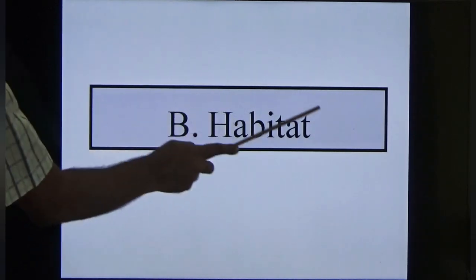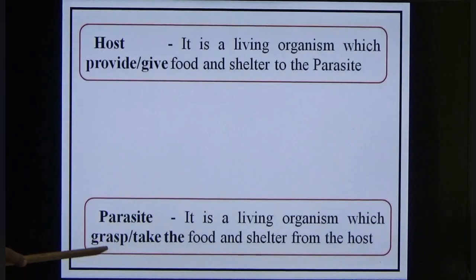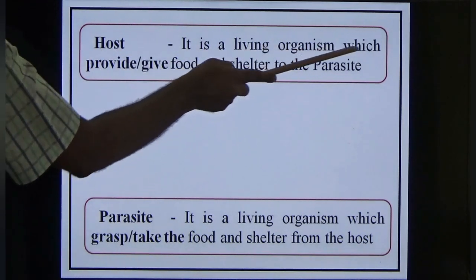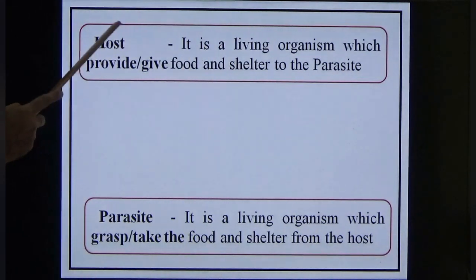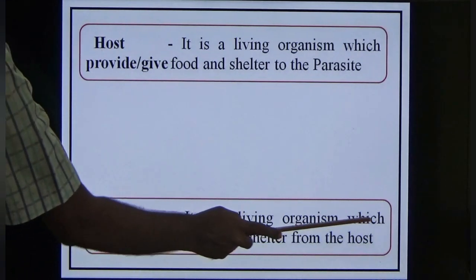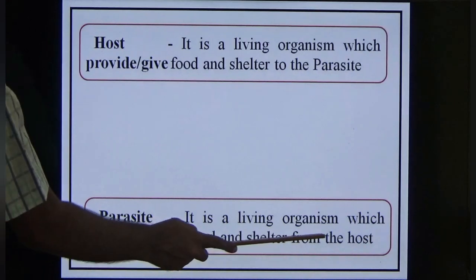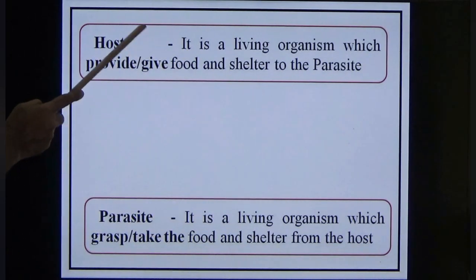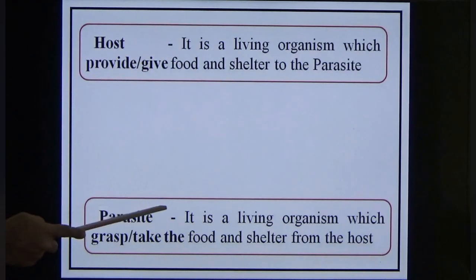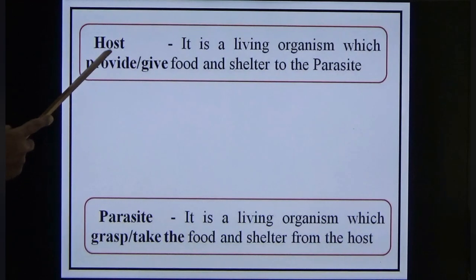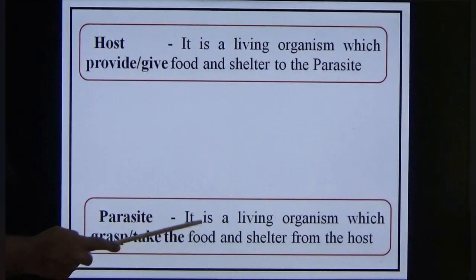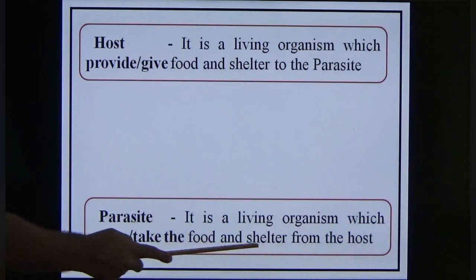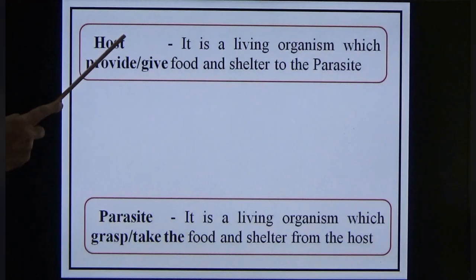Now the habitat. Before going to habitat, we should know two words: host and parasite. The host is the living organism which provides food and shelter to the parasite. The parasite is the living organism which takes food and shelter from the host. An analogy: parents are like the host and children are like the parasite, because parents provide food and shelter to the children.